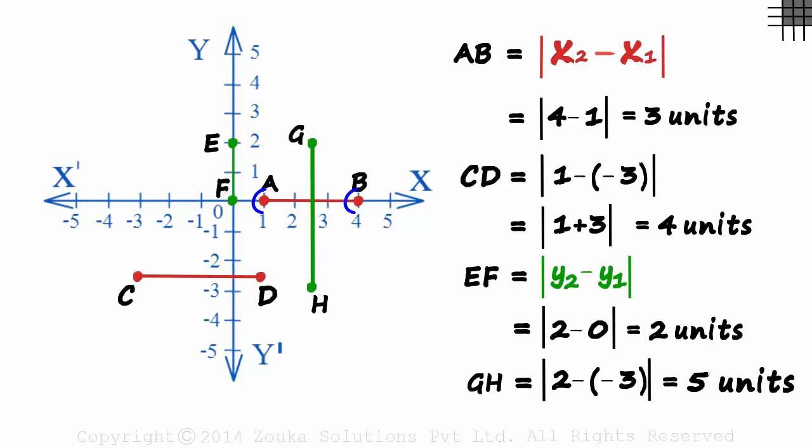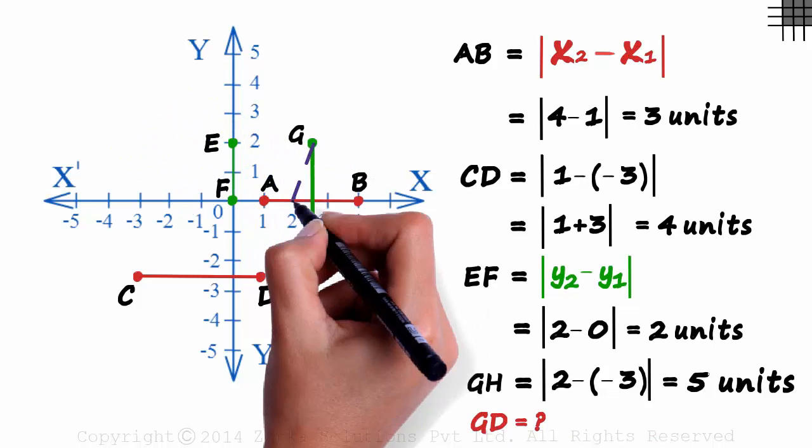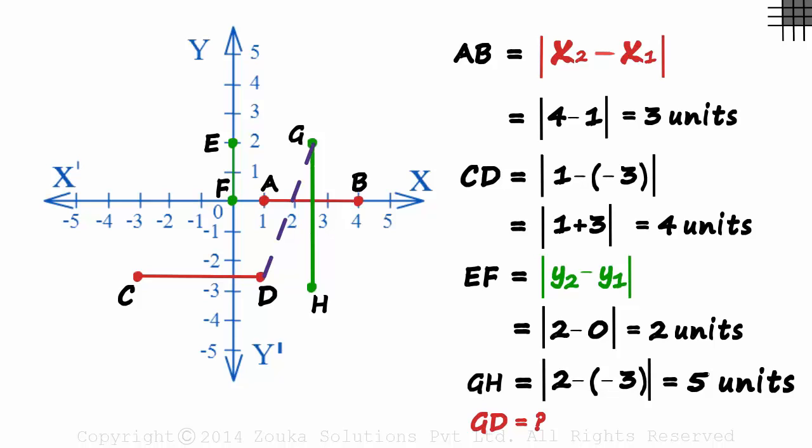Finding the distance between two points which lie on the axis or form a line parallel to an axis is pretty easy. But what if we have to find the distance between two points which do not form a line parallel to an axis? What if we are asked to find the length of line segment GD here? This segment is not parallel to any of the axis. How do we find its length?